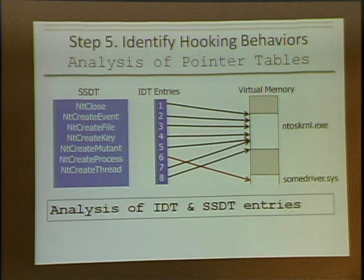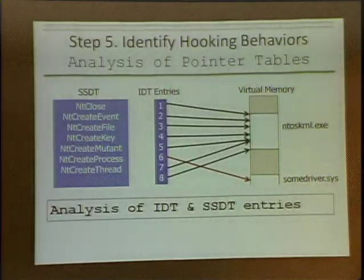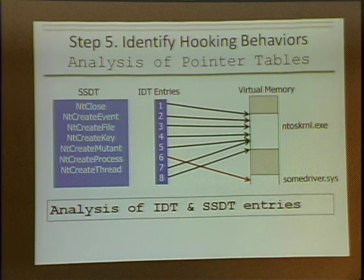Step five: hooking behaviors. Hooking is not always bad — sometimes your antivirus will exhibit these behaviors. Here are a couple of structures I would look at to see if there's any subversion going on: I look at the SSDTs and the IDT. Sometimes evil.exe won't be something you pick out straight away — you'll have to get to step five to find something suspicious. So I include looking at rootkit behaviors and hooking behaviors, and that might be your foot in the door to identifying evil.